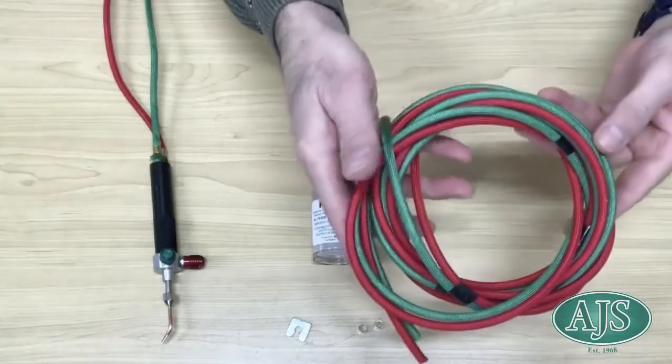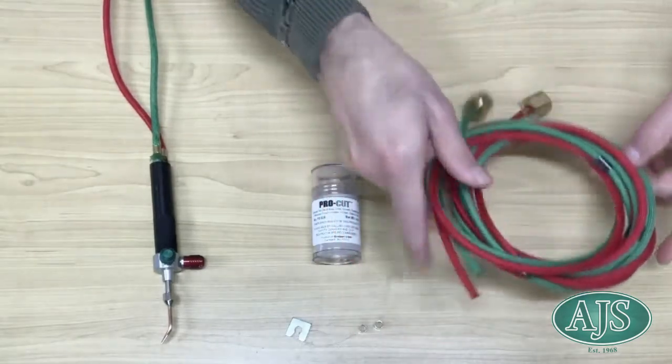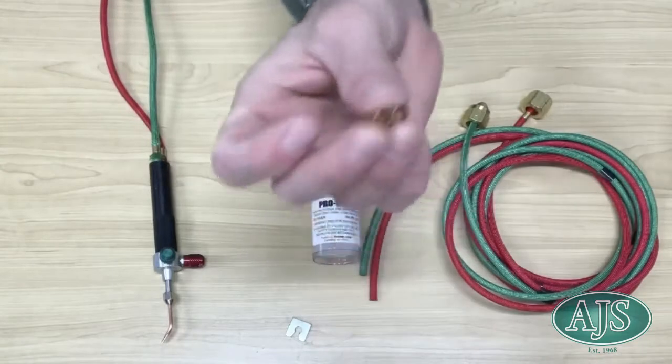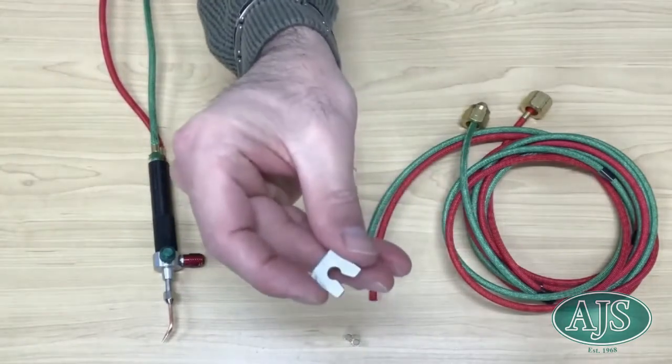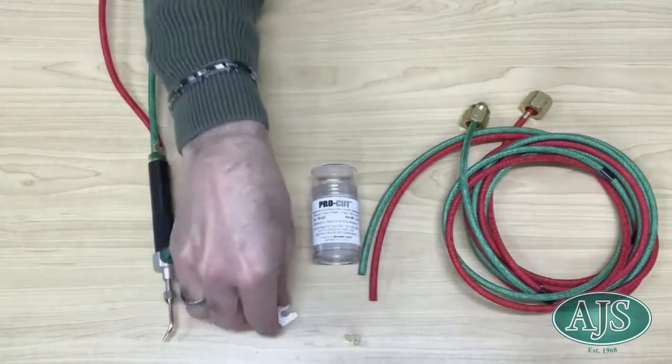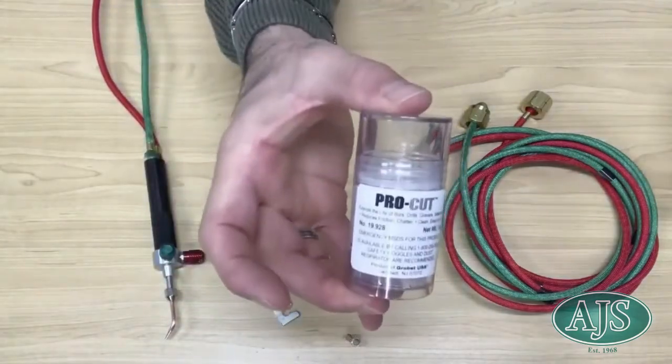For this task you will need a new replacement set of Little Torch hoses, two new brass ferrules, a ferrule assembly tool and some lubricant.